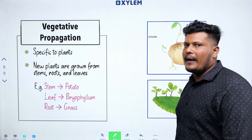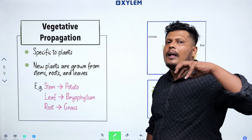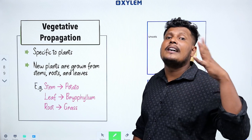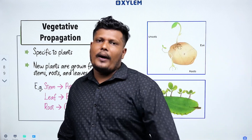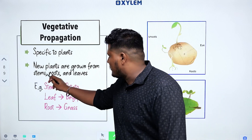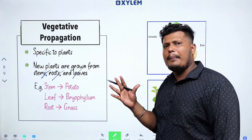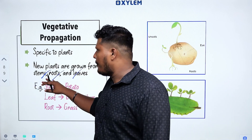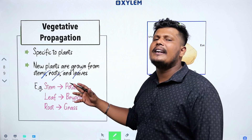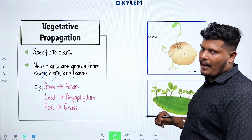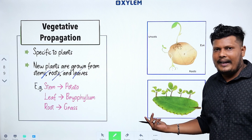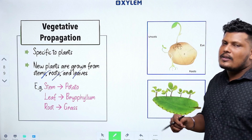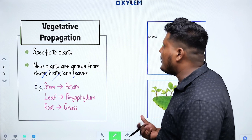Next is Vegetative Propagation. The vegetative parts of a plant are the leaf, stem, and root. New plants can develop from these vegetative parts. Flowers are involved in sexual reproduction, but through roots, stems, and leaves — vegetative propagation occurs. This is an important method by which plants reproduce asexually.